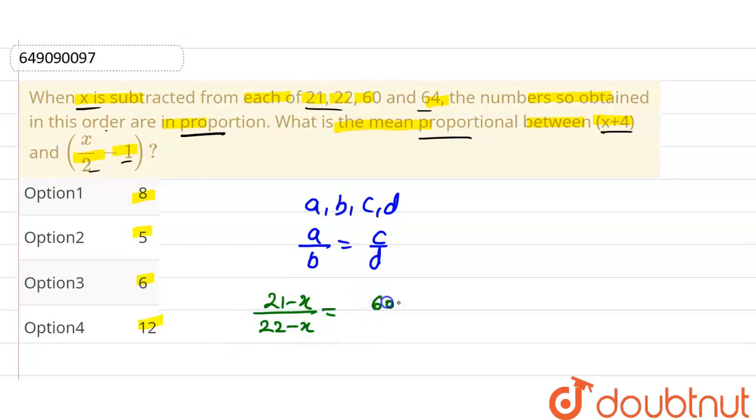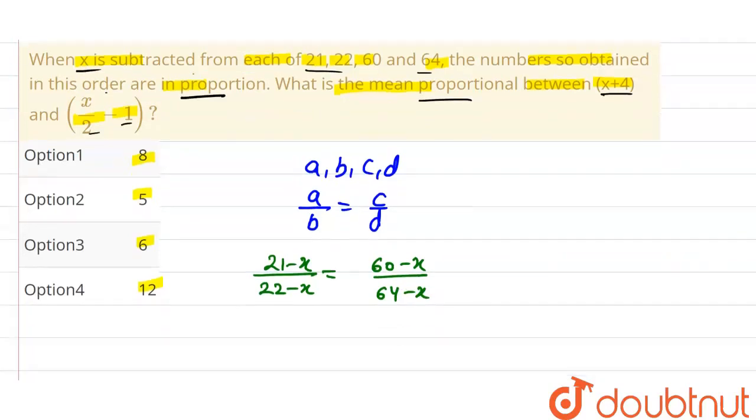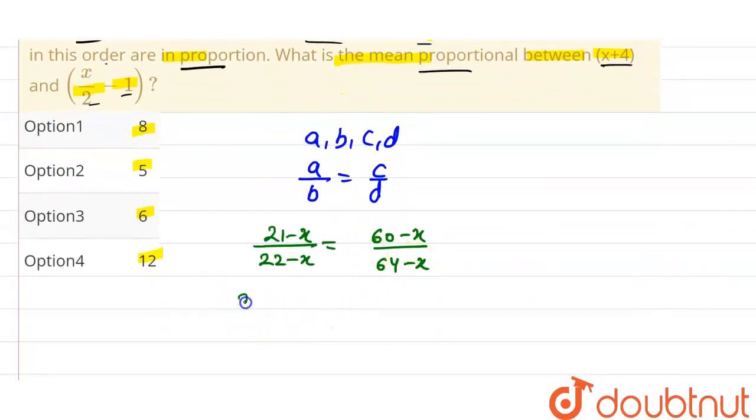So here we go. (21-x)/(22-x) equals (60-x)/(64-x). We'll multiply this using cross multiplication. So (21-x) into (64-x) is equal to (60-x) into (22-x).